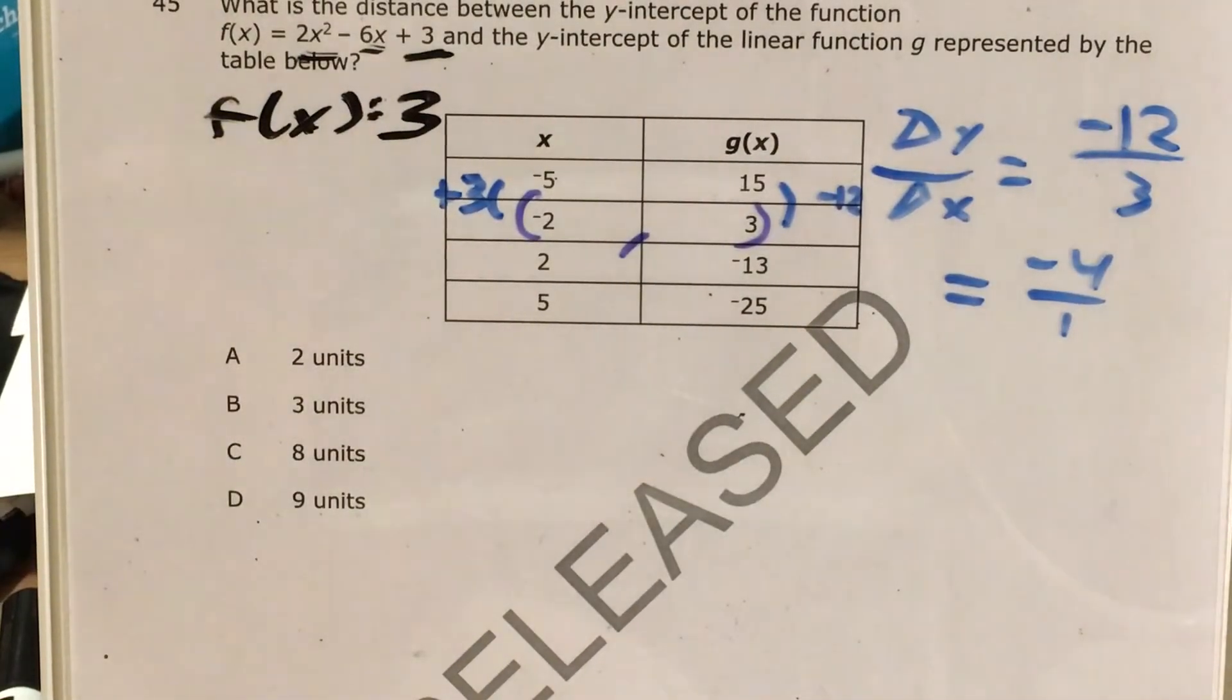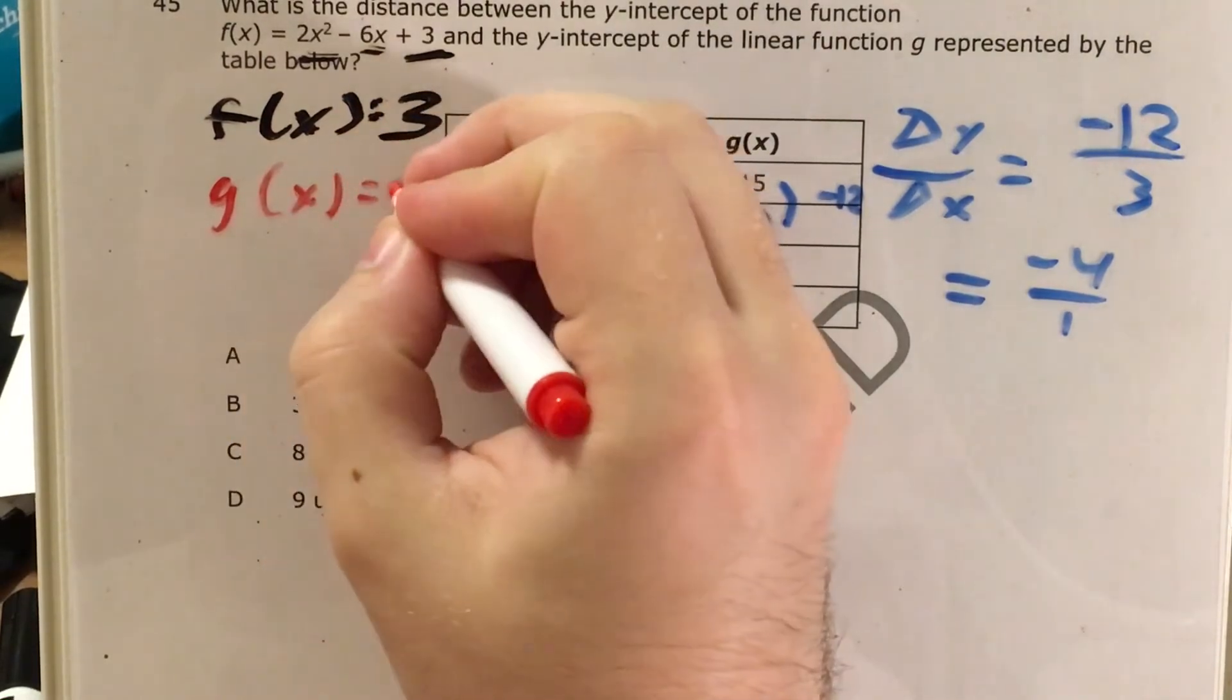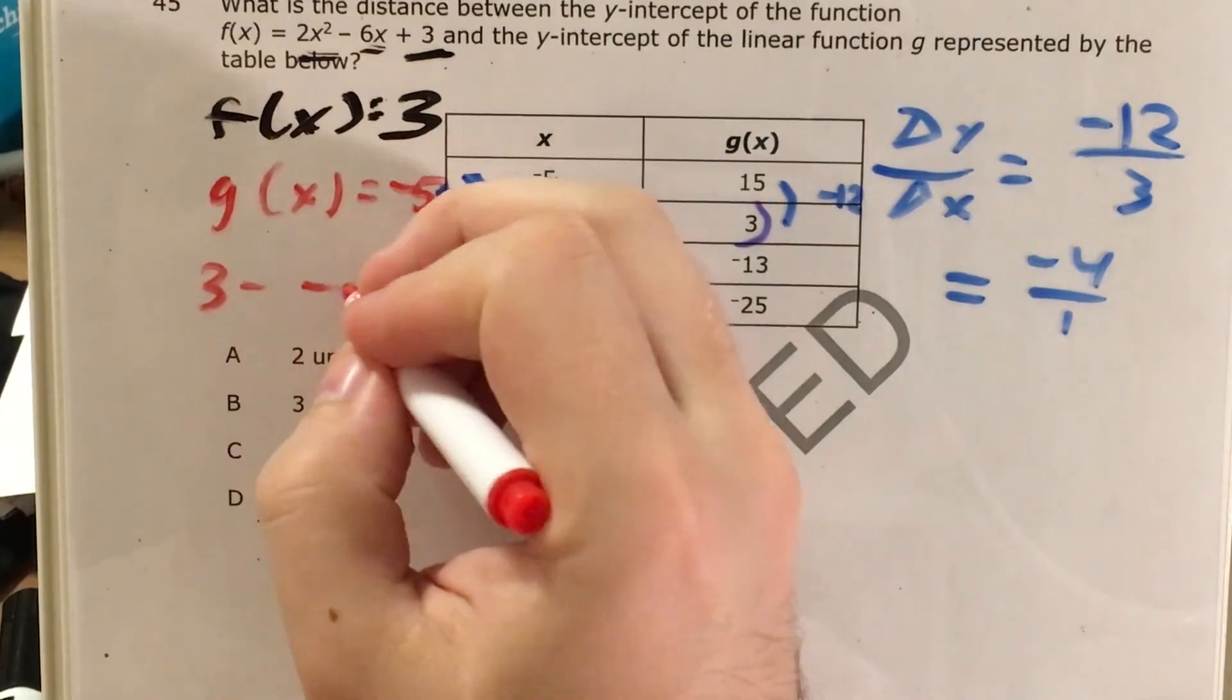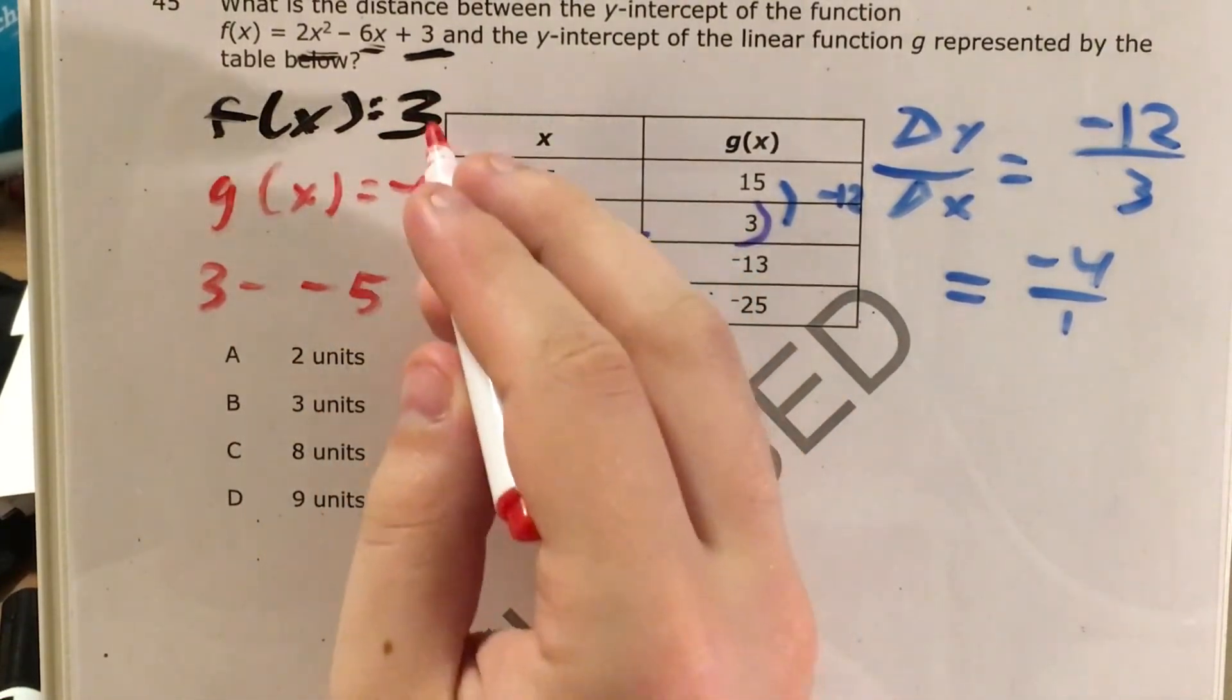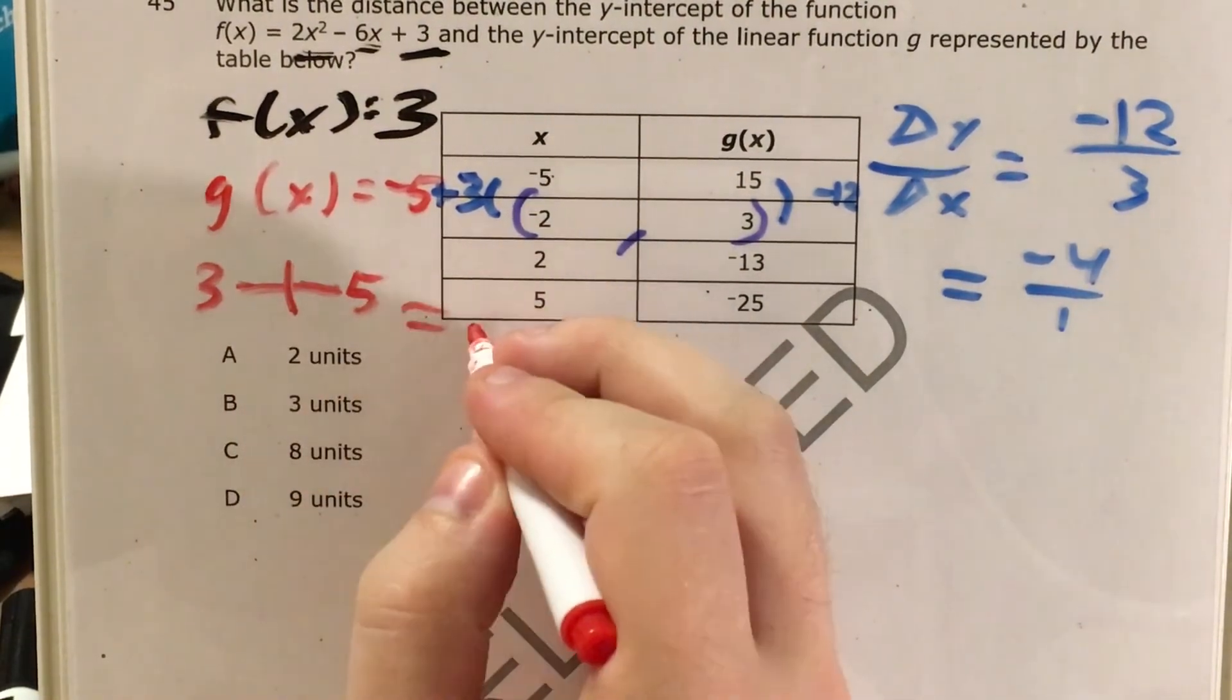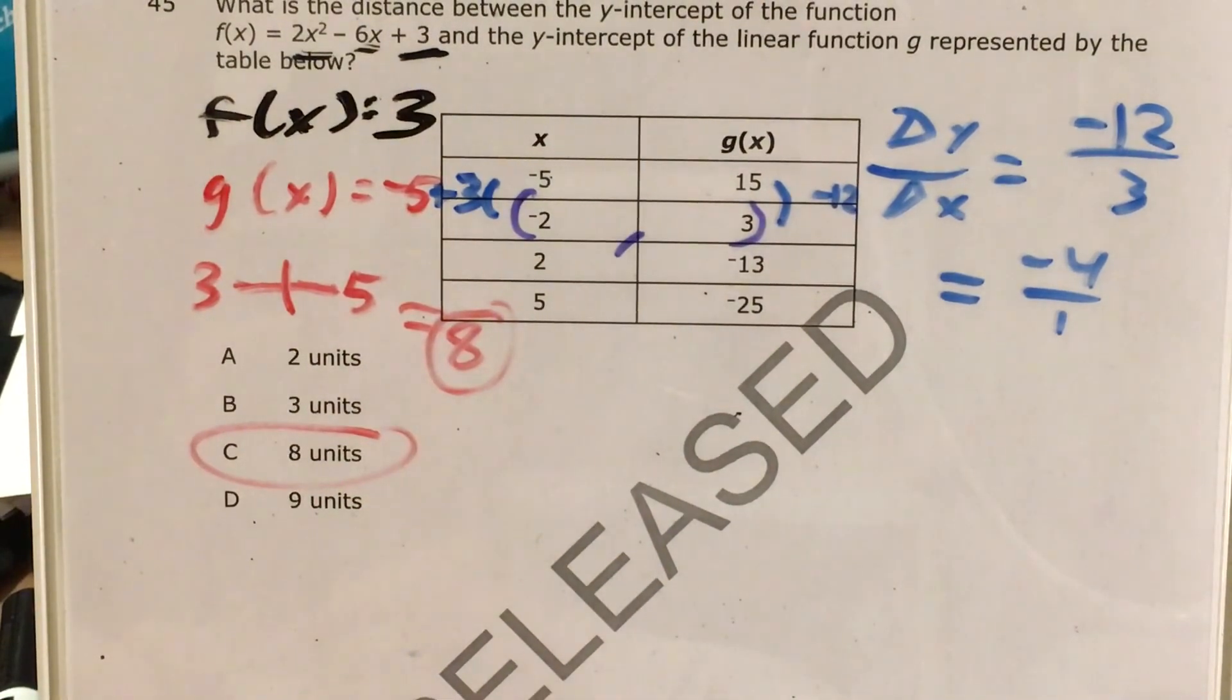f(x) is 3, g(x) is -5. I need to figure out what 3 - (-5) is to find the distance between these two y-intercepts. Minus a negative becomes positive, so the distance is 8. The answer is C, 8 units.